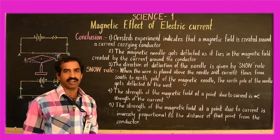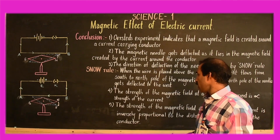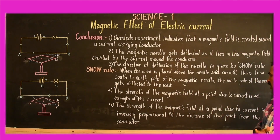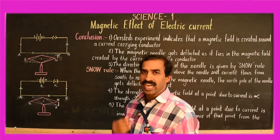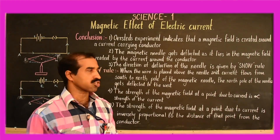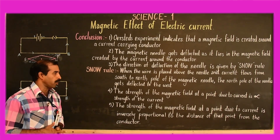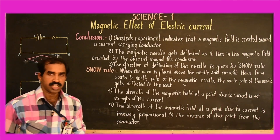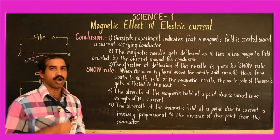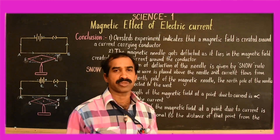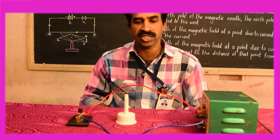The strength of the magnetic field depends on two factors. First, the strength of the magnetic field at a point due to current is directly proportional to the strength of the current. Second, the strength of the magnetic field at a point due to current is inversely proportional to the distance of that point from the conductor. To wind up, I shall show you something interesting.